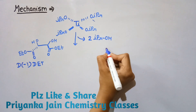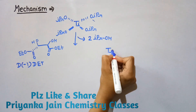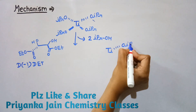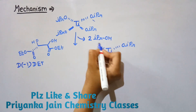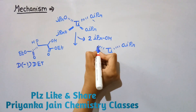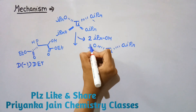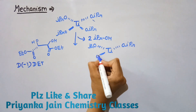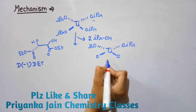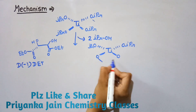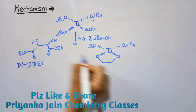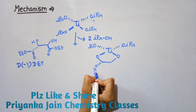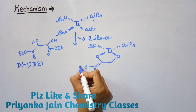Two isopropyl alcohol molecules are removed, and at those positions we form new bonds. This part remains as it is. At these positions there are O groups, and we form bonds here. The rest of the structure remains as it is.